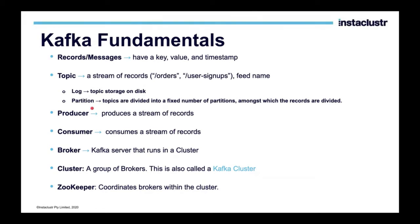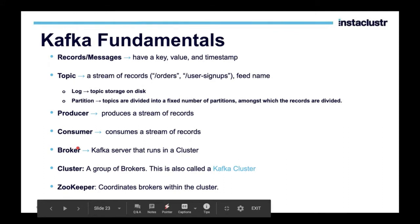Partitioning — this stream of data or log is partitioned or subdivided. Topics are divided into a fixed number of partitions among which the records are divided, to enable distributed processing. A producer produces a stream of records. A consumer consumes a stream of records. A broker is a Kafka server that runs in a cluster — one server participating in a cluster. A cluster is a group of brokers, generally three or more, to take advantage of distributed processing and all the features we have seen.